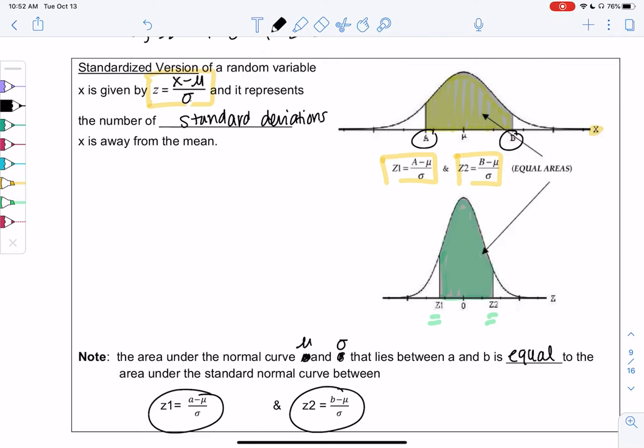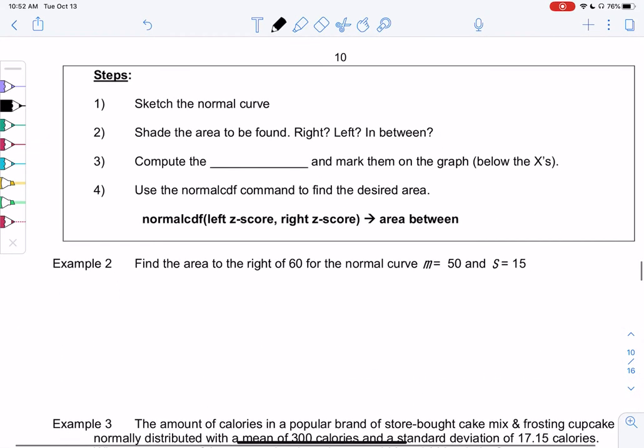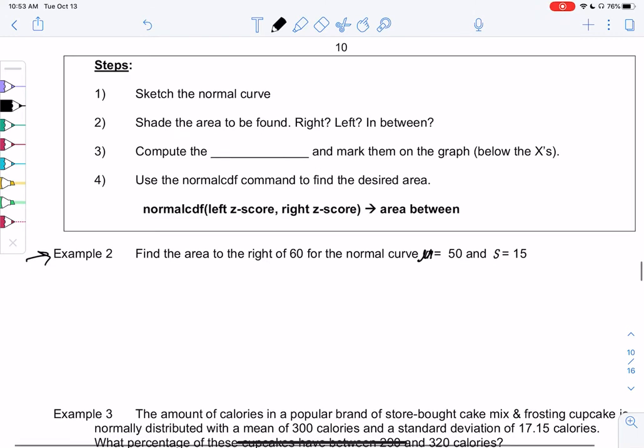So let's try an example. So example two. I'll go through the steps as we do this example. We have the area to the right of 60, and we know the mean is 50, and the standard deviation is 15.